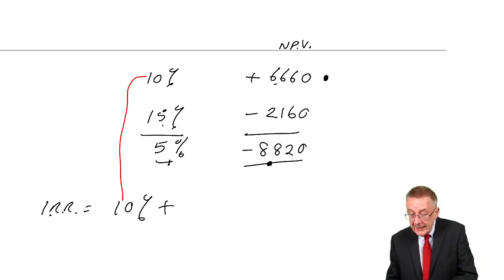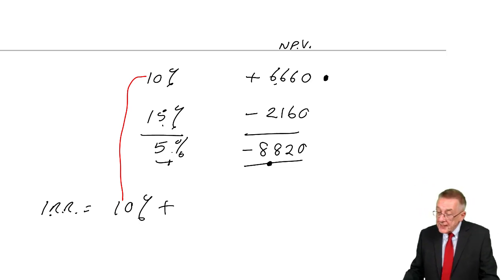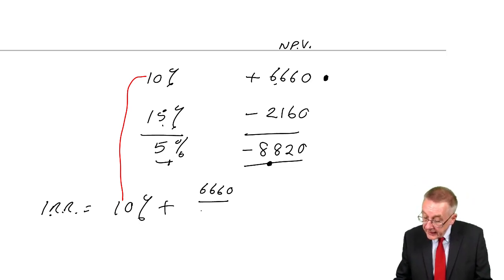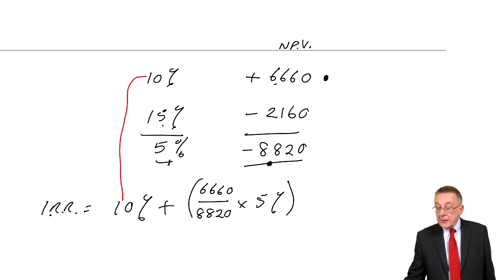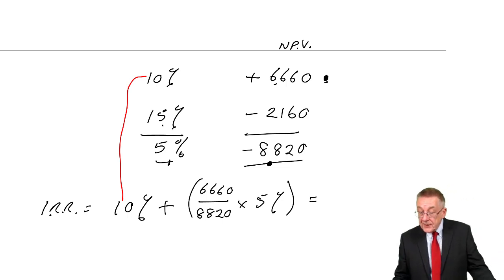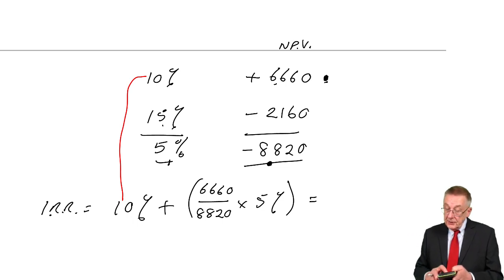And now we can write, at 10% we knew it was more than 10%. The question is how much more? Well, to get to zero, I need that NPV to fall by 6,660. We know that we'll get a fall of 8,820 by changing five percent. Well, if 8,820 is five percent, 6,660 will be six eighths of five percent.